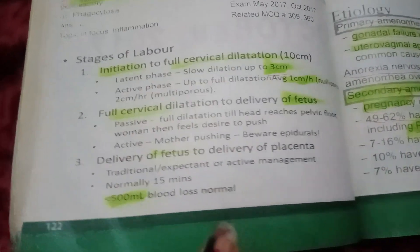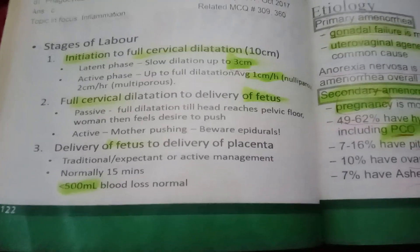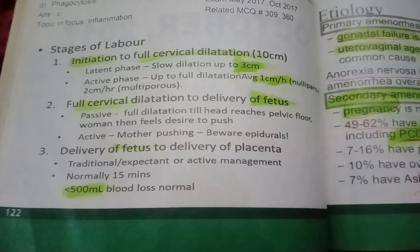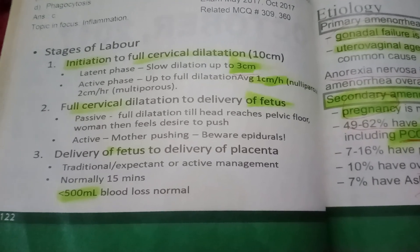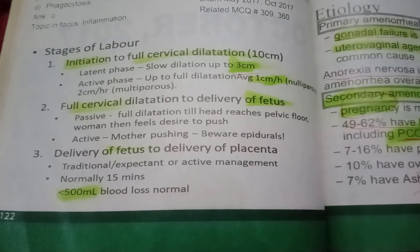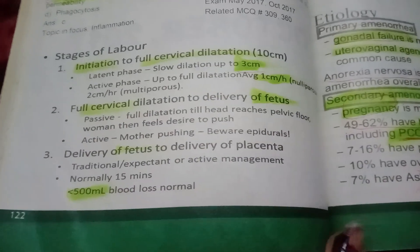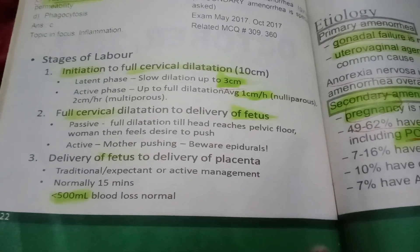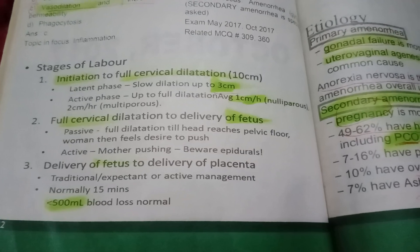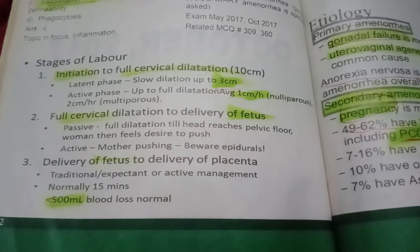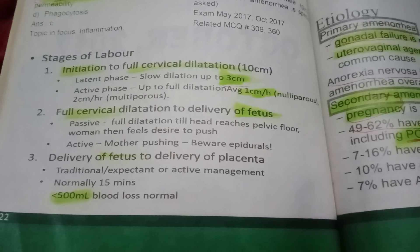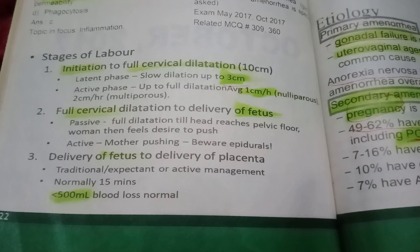The first stage of labor is from initiation to full cervical dilatation at 10 cm. It has a latent phase with slow dilation up to 3 cm, and an active phase with full dilation averaging 1 cm per hour in nulliparous and 2 cm per hour in multiparous women. After full cervical dilatation, there is a passive phase until the head reaches the pelvic floor, and then an active phase where the woman feels the desire to push. Be aware of epidurals affecting this.